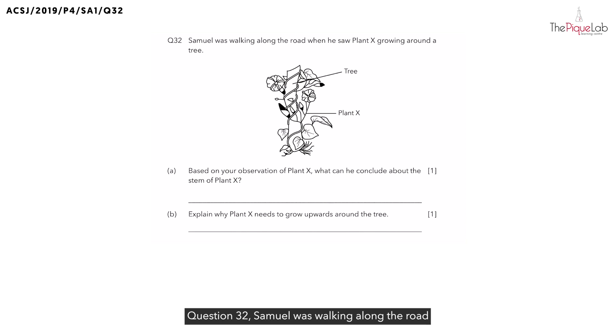Question 32. Samuel was walking along the road when he saw plant X growing around a tree. So, in part A, they said, based on your observation of plant X, what can he conclude about the stem of plant X?